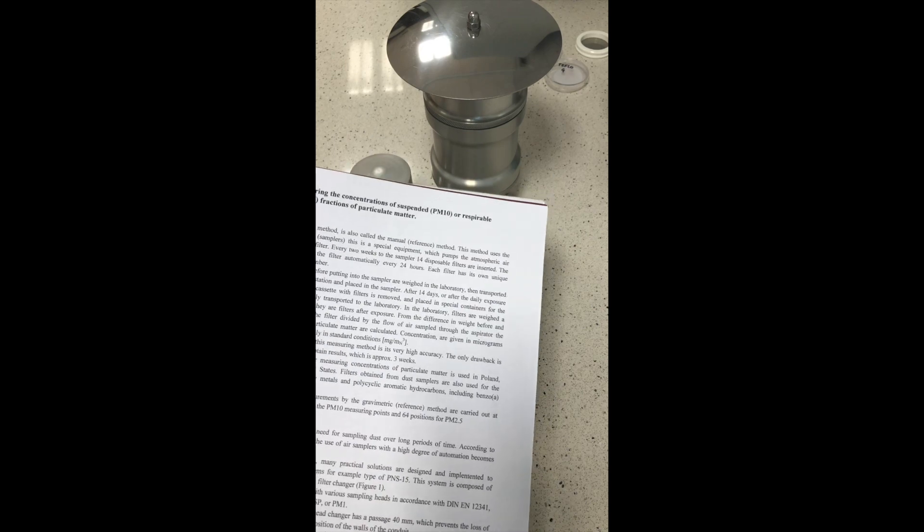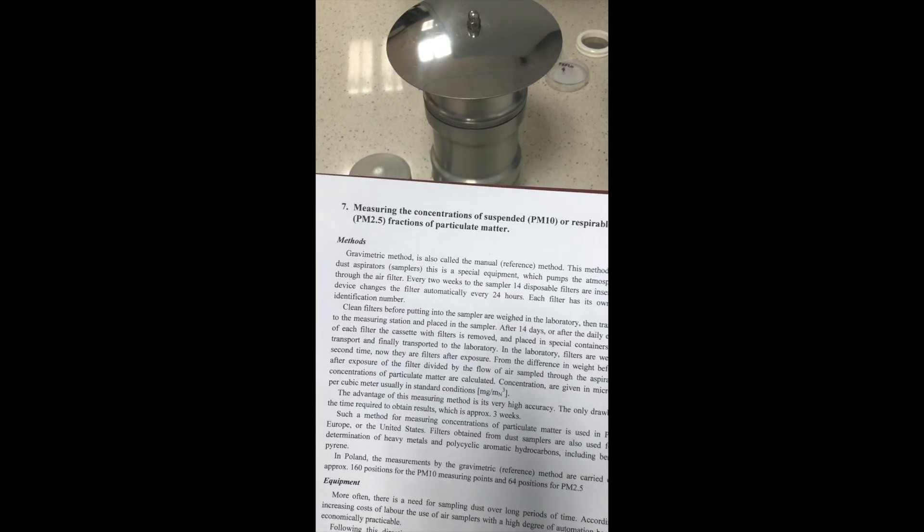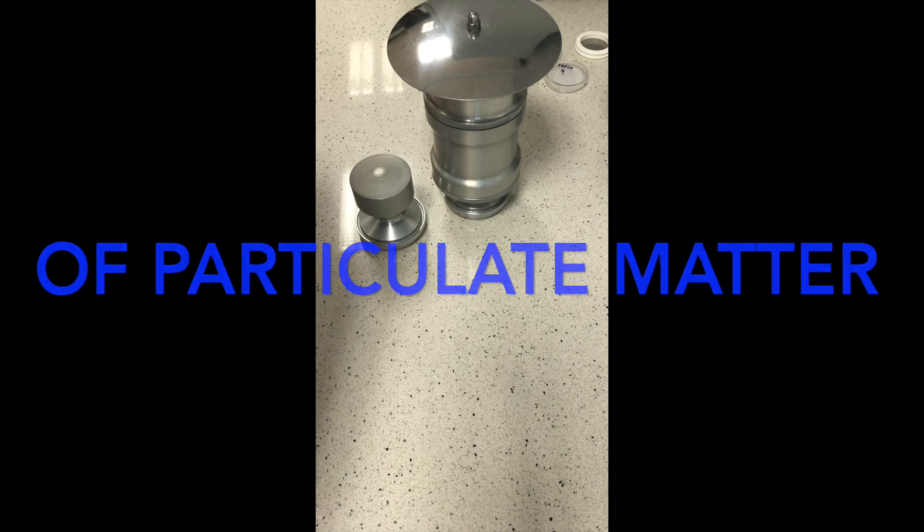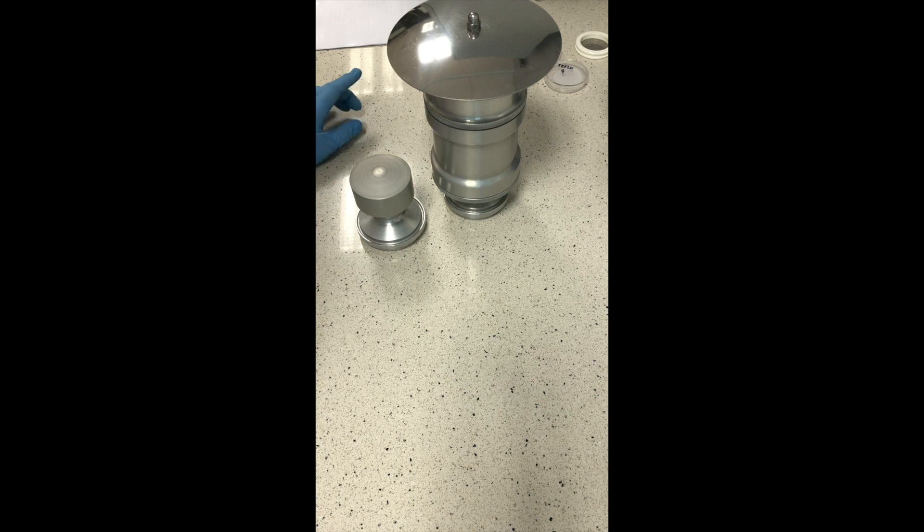The last exercise on our list is measuring the concentration of suspended PM10 or respirable PM2.5 fraction of particulate matter. You probably know the difference between PM10 and PM2.5. PM10 is particles lower than 10 micrometers, and PM2.5 is particles smaller than 2.5 micrometers.